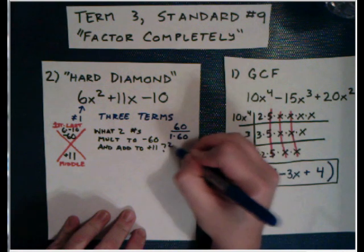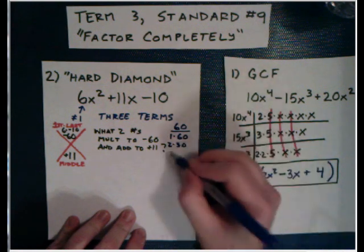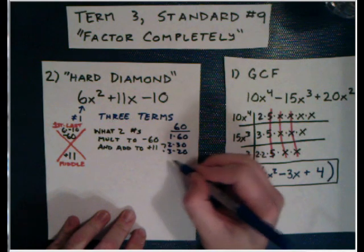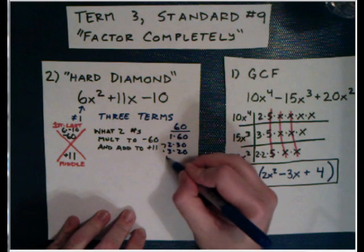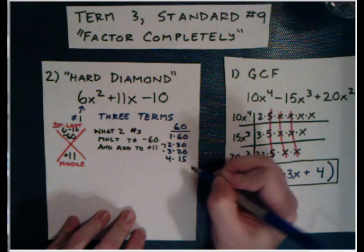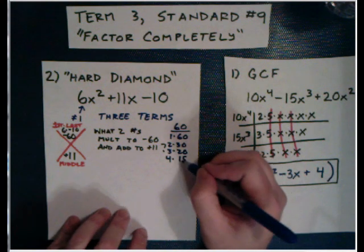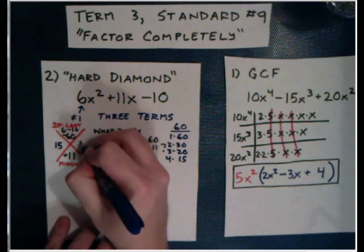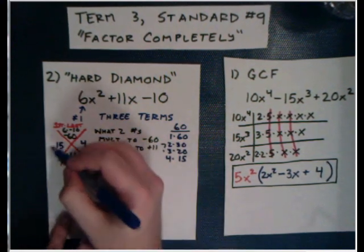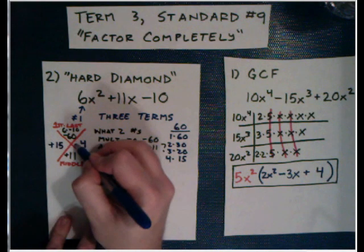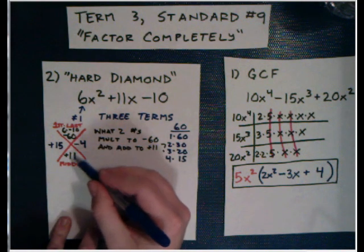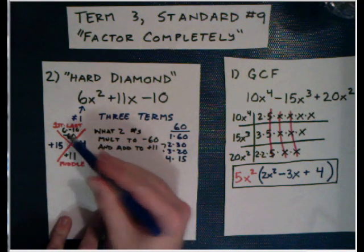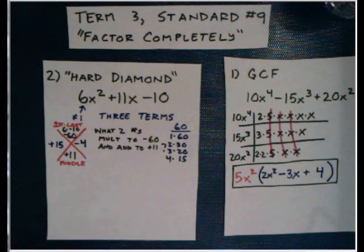4 times 15. I think that might work, because 15 minus 4 is going to give me 11. So I'm thinking that will be our numbers. It'll be 15 and -4. There we go. Positive 15 minus 4 gives me positive 11. And positive 15 times negative 4 gives me negative 60. So there are my two numbers.